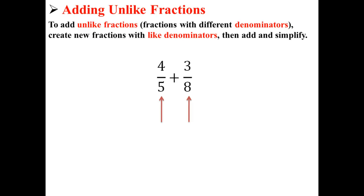Here we're trying to add two fractions that have unlike denominators. We have 4 over 5 and 3 over 8. Our denominators are 5 and 8. We need to make them the same before we can add these two fractions.